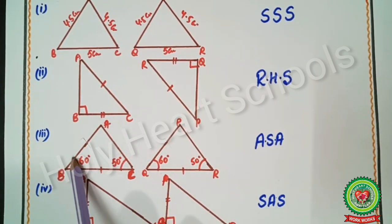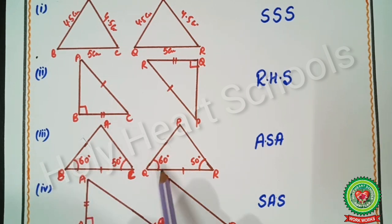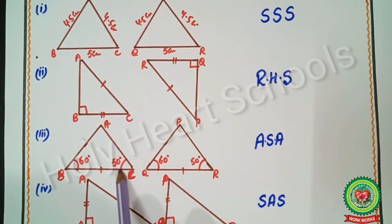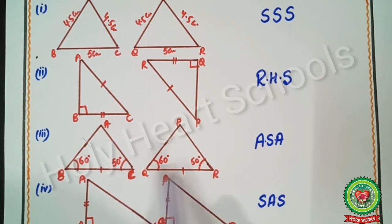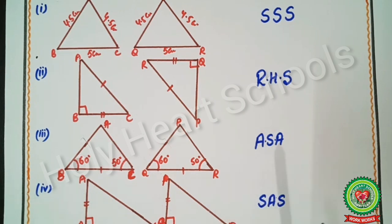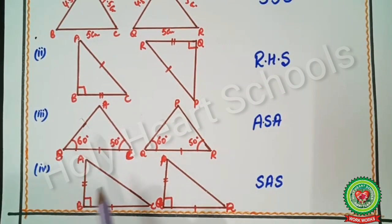In the third example, triangle ABC and triangle PQR: angle B = angle Q = 60°, side BC = side QR, and angle C = angle R = 50°. We have angle, side, angle — so we apply the ASA test.